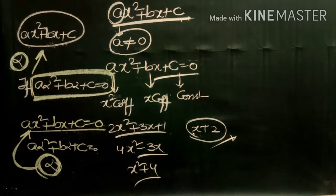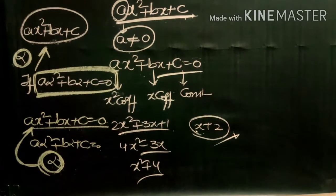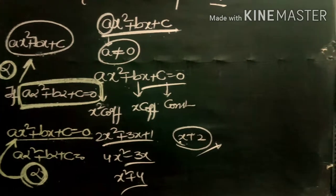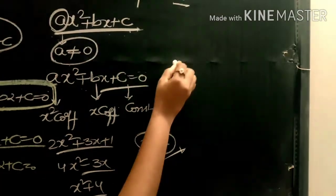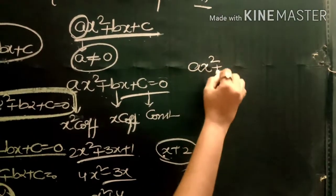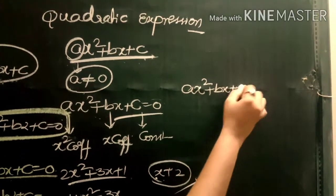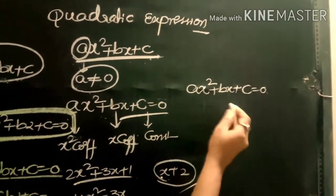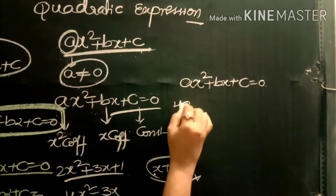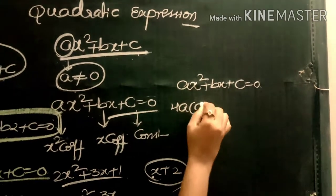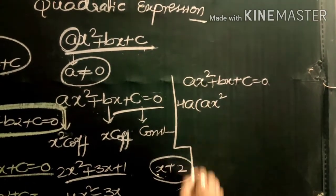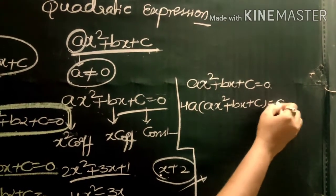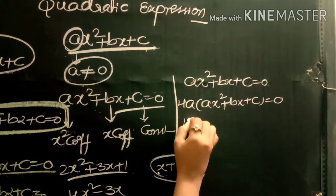That is, if the number alpha satisfies the equation ax² + bx + c = 0, then alpha is the root of the quadratic equation. Alpha is the root of the equation and also the zero of the quadratic expression — both refer to the same thing. Now, to find the roots of the quadratic equation ax² + bx + c = 0, we first multiply the entire equation by 4a.